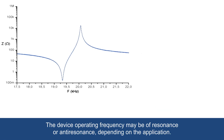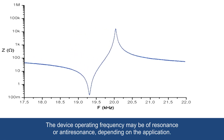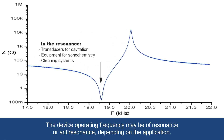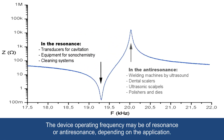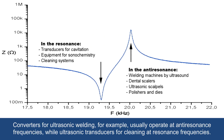The device operating frequency may be of resonance or anti-resonance, depending on the application. Converters for ultrasonic welding, for example, usually operate at anti-resonance frequencies, while ultrasonic transducers for cleaning operate at resonance frequencies.